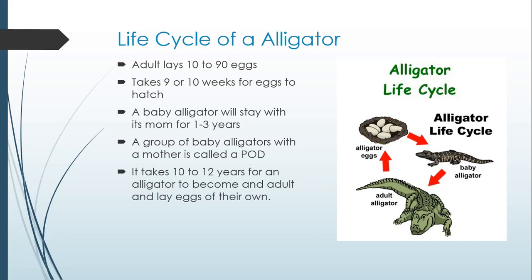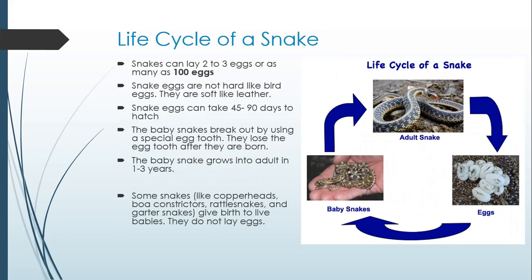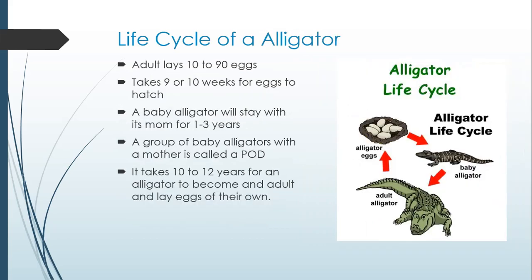It can actually take 10 to 12 years for an alligator to become an adult and lay eggs of their own. If you look at a snake, it only took 1 to 3 years, whereas the alligator takes 10 to 12 years.